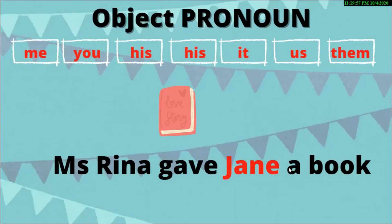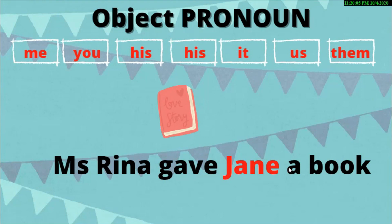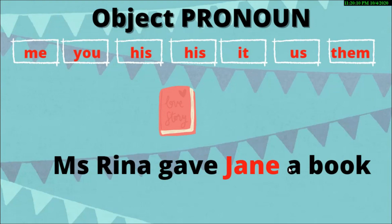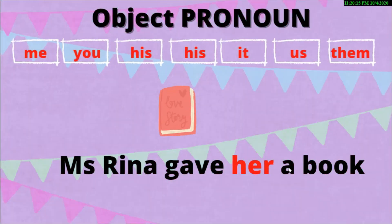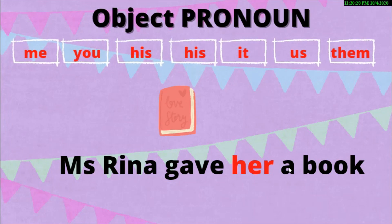Let's look at this sentence: Miss Rina gave Jane a book. Who is the receiver of the action? Jane is. So let's go ahead and replace Jane with one of the object pronouns. Jane is a girl, so it is 'her.' Miss Rina gave her a book.